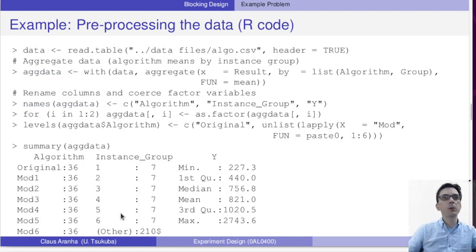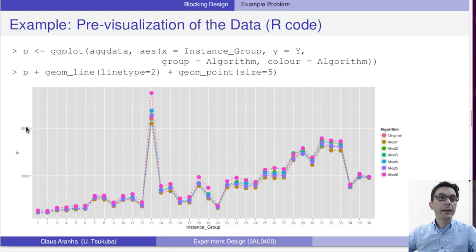So this is how we would calculate this aggregation in R. The data for this example is available on Manaba, so you can apply this code to obtain these 36 aggregated observations that I mentioned.